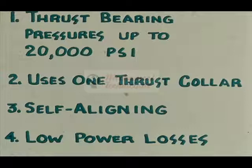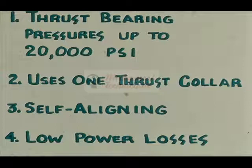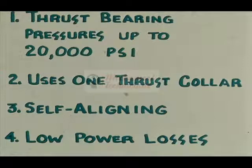The Kingsbury thrust bearing eliminated or reduced many of the limitations imposed by the old collar and block system. First, it permitted thrust pressures on the bearing to increase up to 20,000 pounds per square inch of projected area. Second, it permitted the use of a single thrust collar. Third, the bearing was designed to be self-aligning with each bearing face carrying its share of the load. Fourth, horsepower losses in the bearing were reduced to about 5% of the old values.